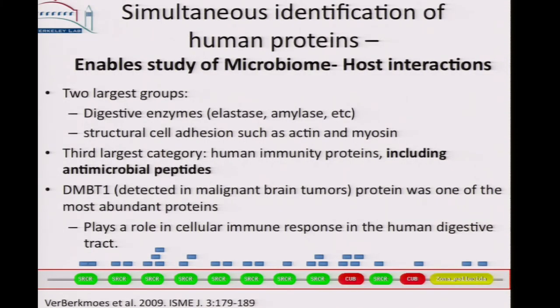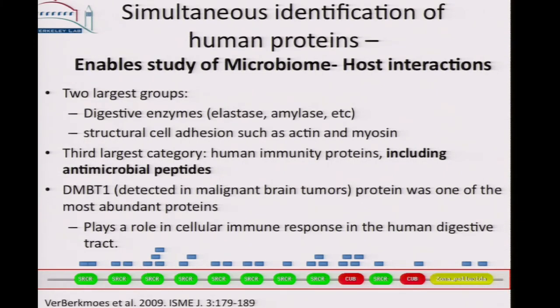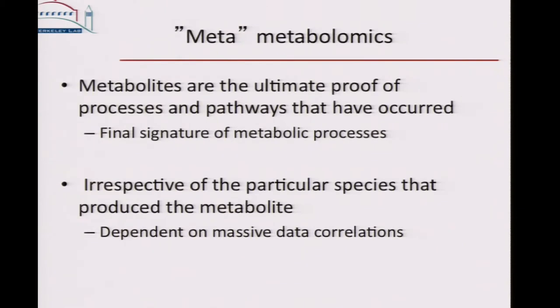Another nice thing about doing the proteome is that as a microbiologist, I initially thought the human proteins were contaminants. But they actually turned out to be very useful, because you can study the microbiome's interaction with the host by looking at the human proteins — we get the human proteins for free, at least those attached to the bacterial cells since we enrich the bacteria. When we look at the human proteins, the largest groups are usually digestive enzymes and those involved in cell adhesion. However, we also see very interesting proteins including antimicrobial peptides — for example, DMVT1, thought to play a role in cellular immune response.